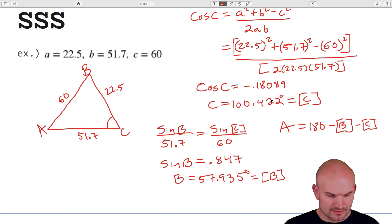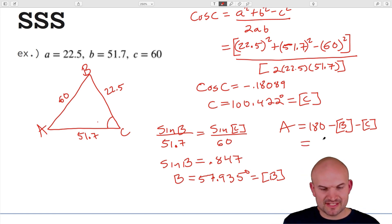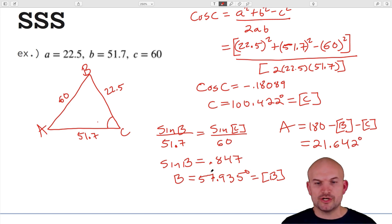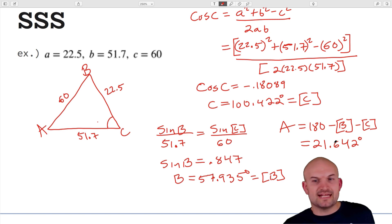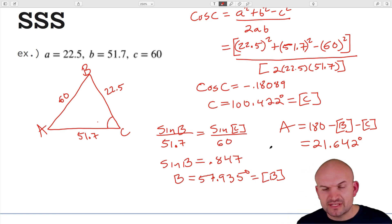Always check that your angles make sense. Here we have roughly 21, 57.9, and 100.4 degrees — those are going to add up to very close to 180. A small rounding error is perfectly fine. If you see something like 224 degrees, you know something went wrong, so be careful when storing and using your angles.